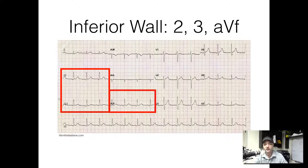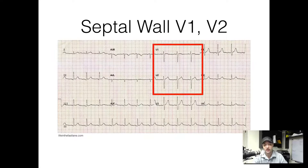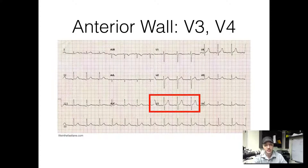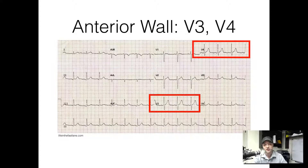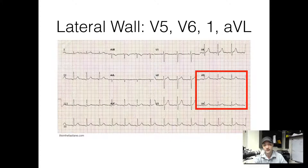When we get to the V leads, which are actually on the chest — we call them the precordial leads — you're going to look at your septal wall in leads V1 and V2. That's the front of the heart, affected by the left main artery and left coronary artery. Then we have the anterior wall, which is seen by leads V3 and V4 — same thing, left anterior descending artery, left main artery. The lateral wall is looked at through leads V5 and V6.